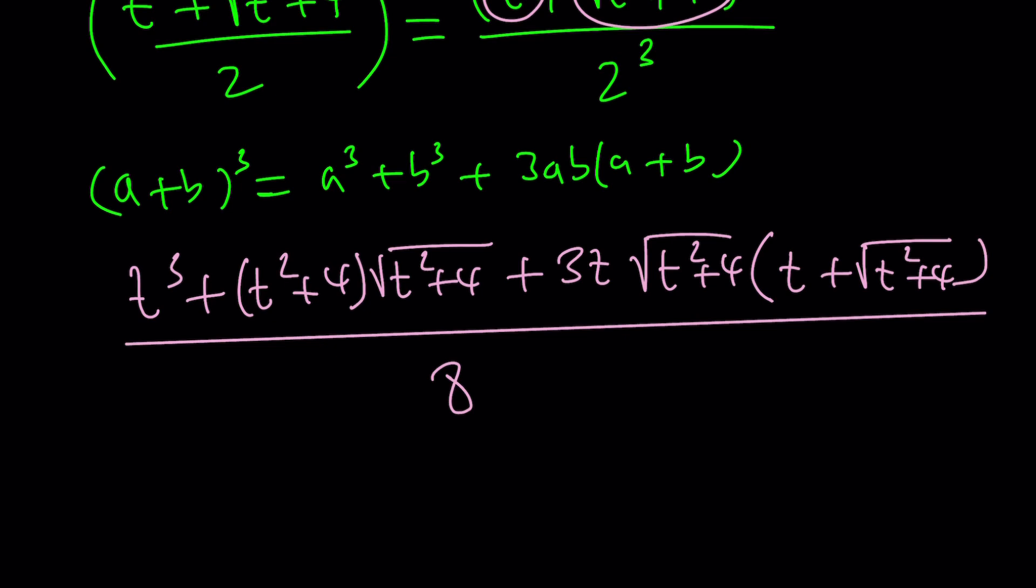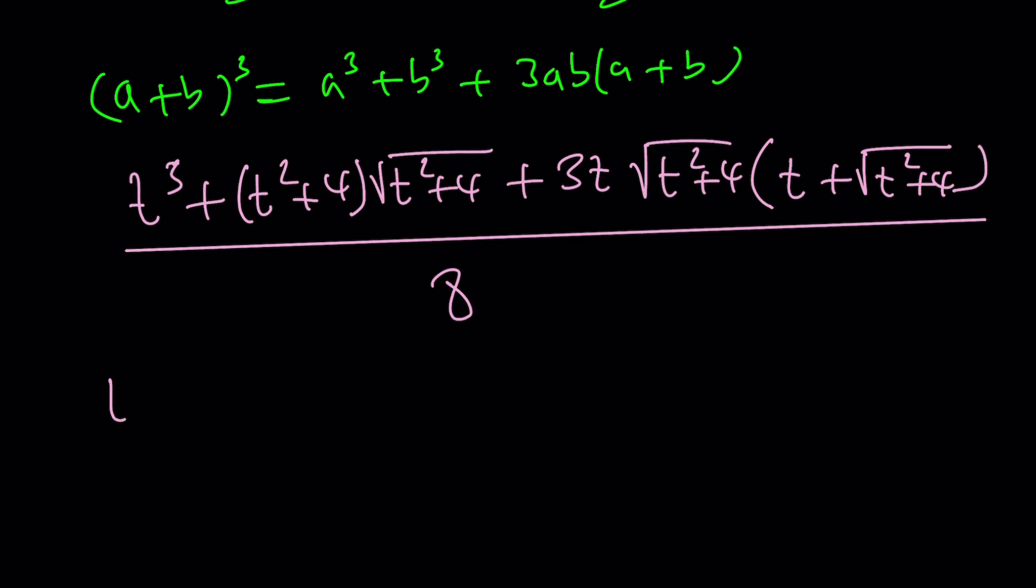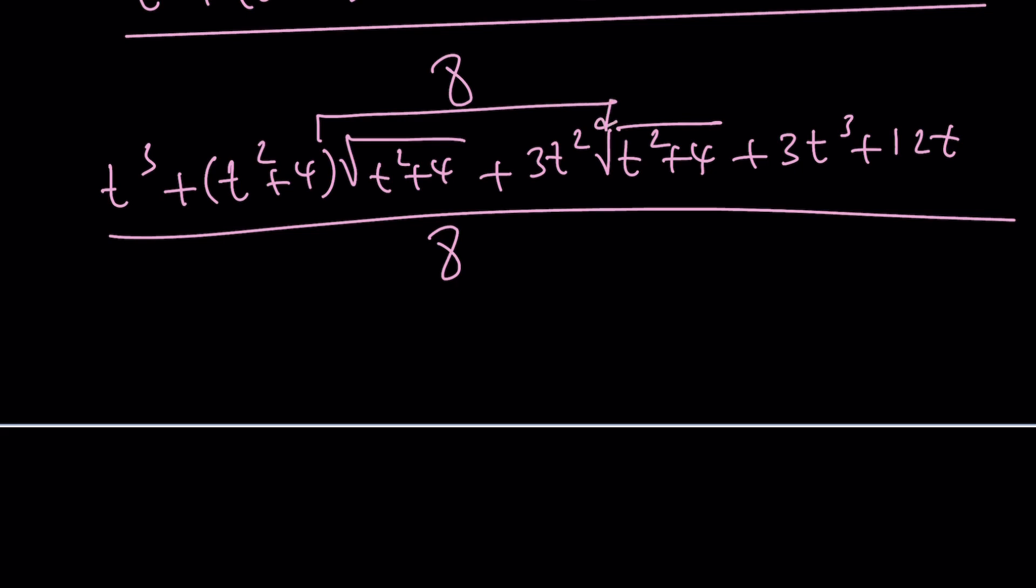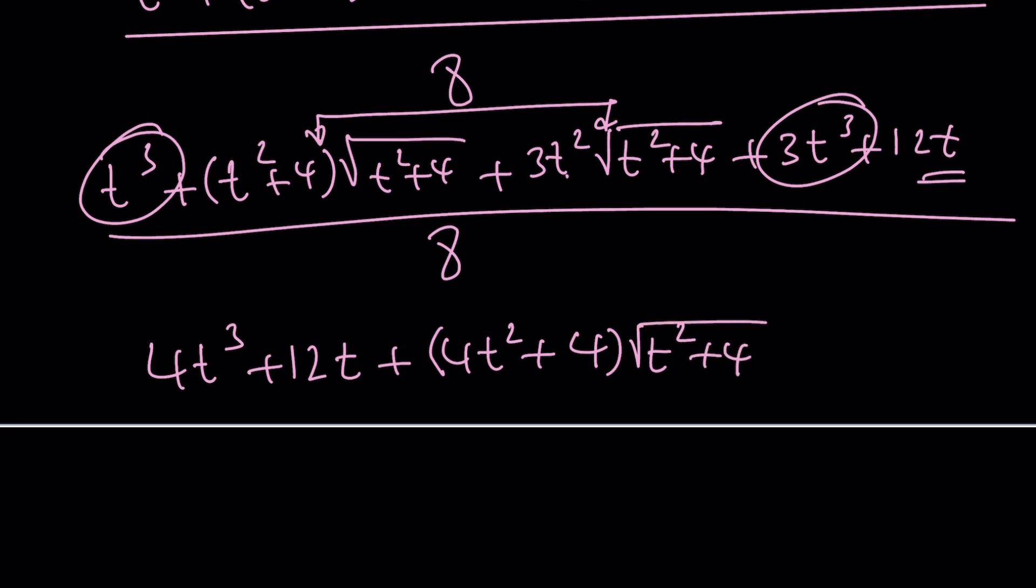Let's go ahead and try to simplify this as much as possible. We get t cubed plus, so here when you distribute you're going to get some terms but let's go ahead and keep it that way for now because I want to combine like terms. My radical is going to be 3t squared multiplied by the radical. And then when you multiply these two things you're going to get t squared plus 4 and then multiply by 3t is going to be 3t cubed plus 12t. And then the whole thing is going to be divided by 8.